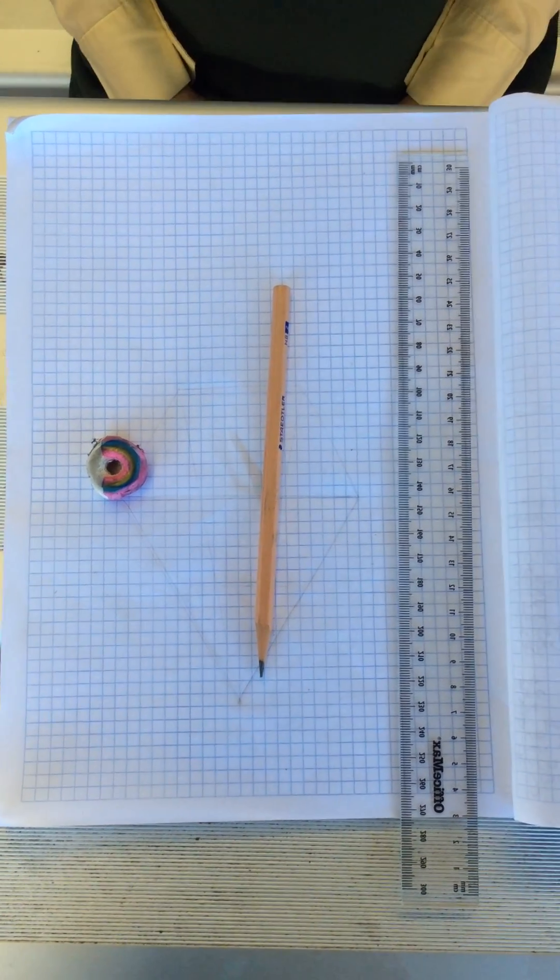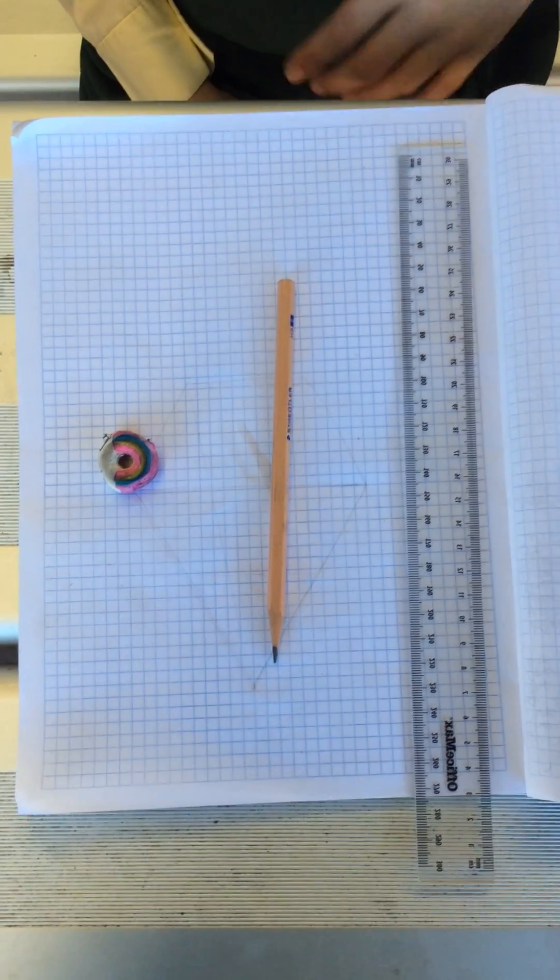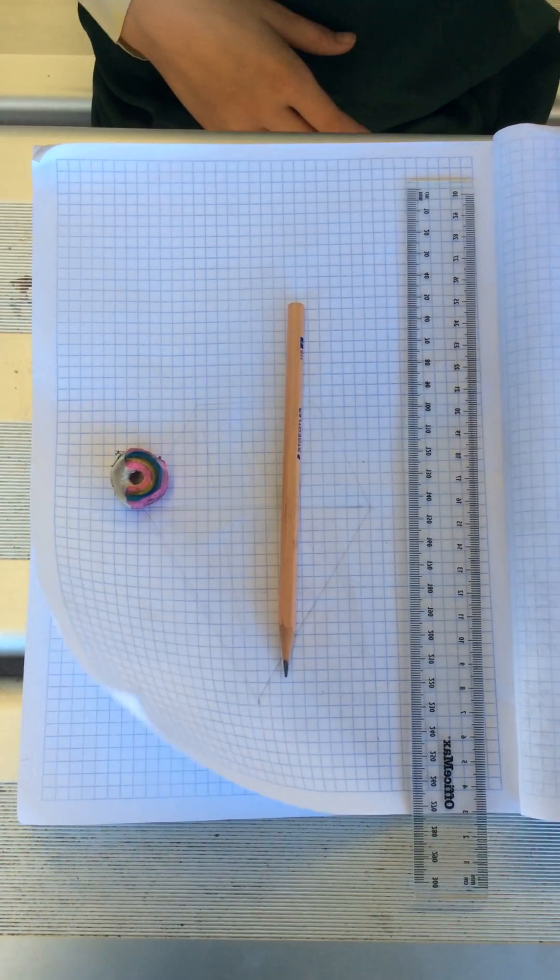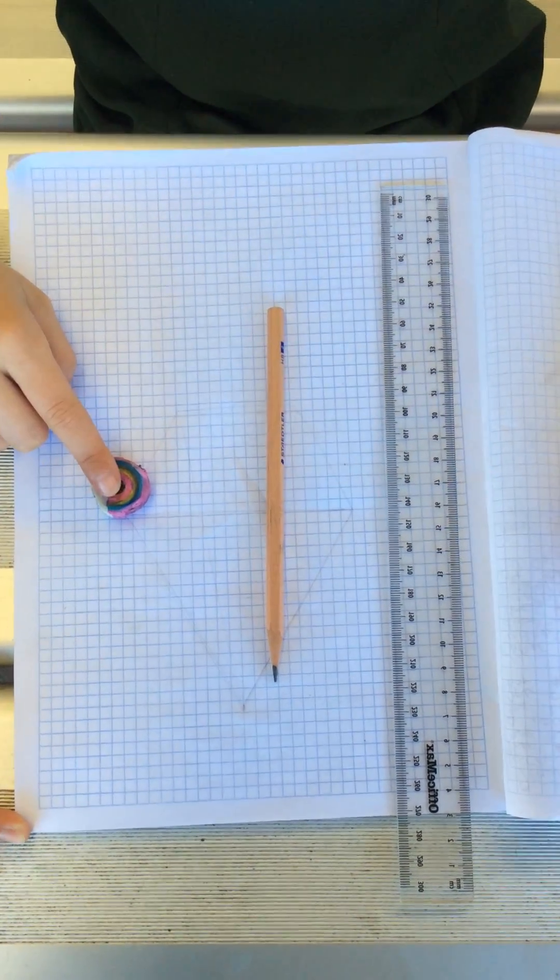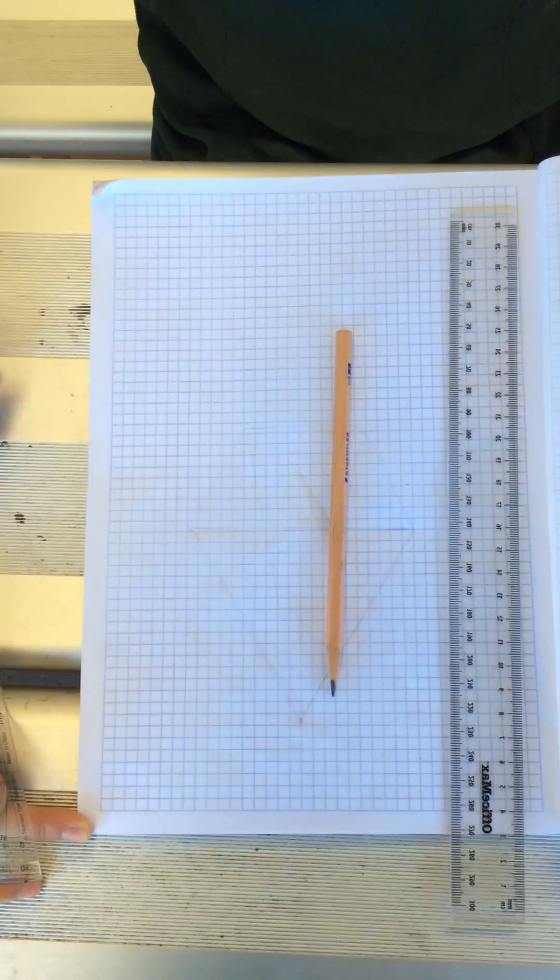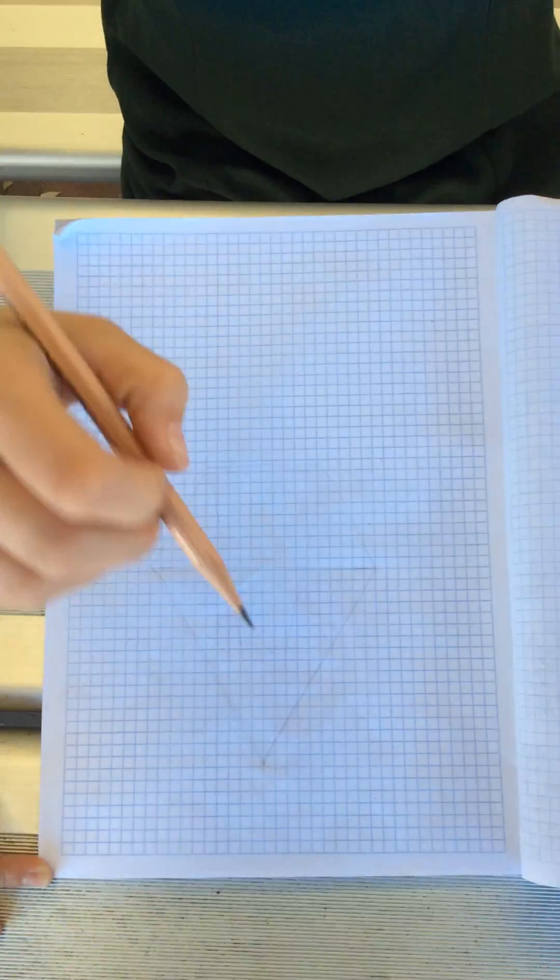Today we're going to be showing you how to make your own hexagonal pyramid. So what you'll be needing for this is a ruler, a pencil and a rubber if you need one. So let's get started.